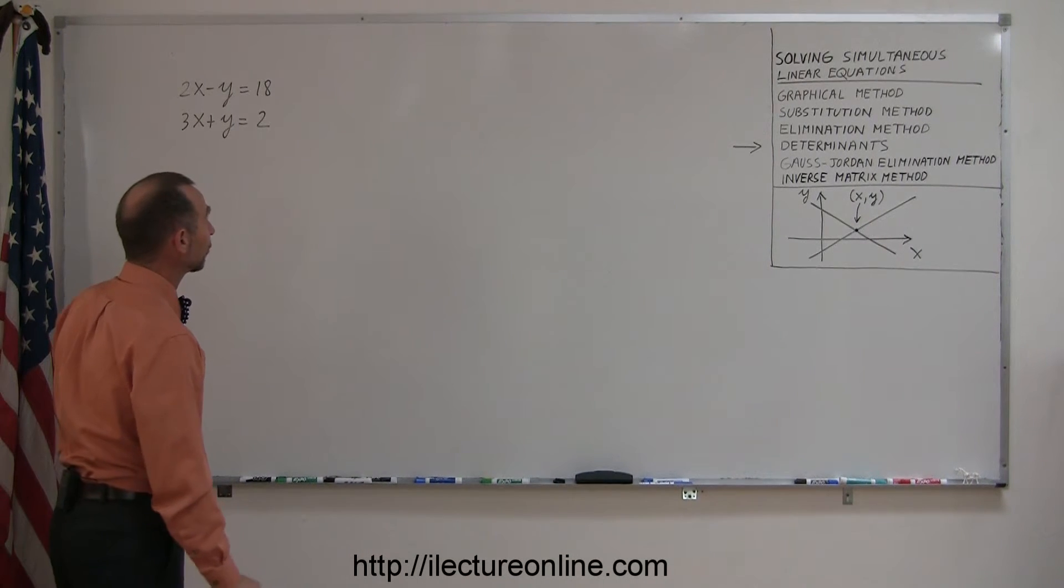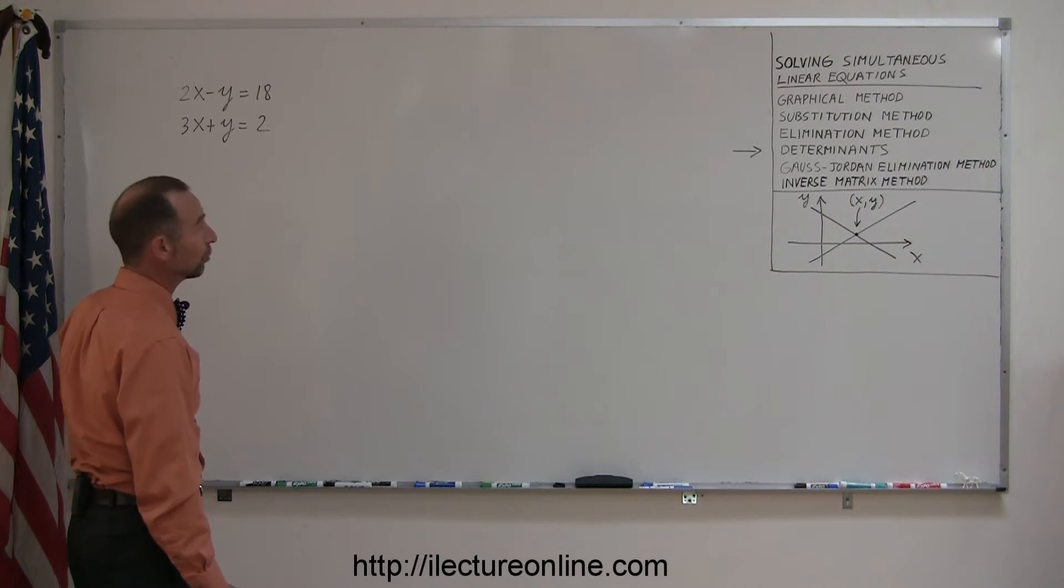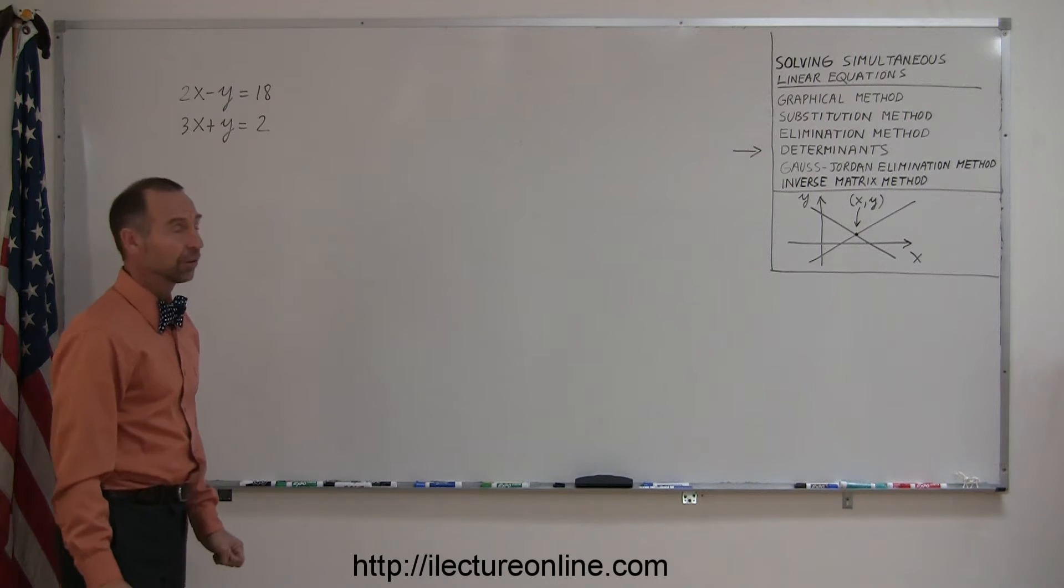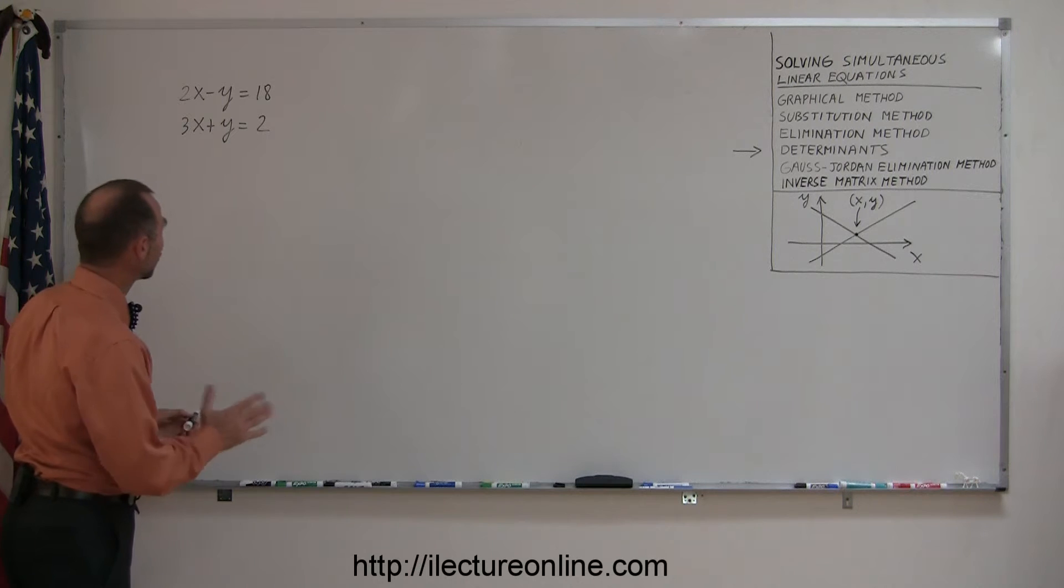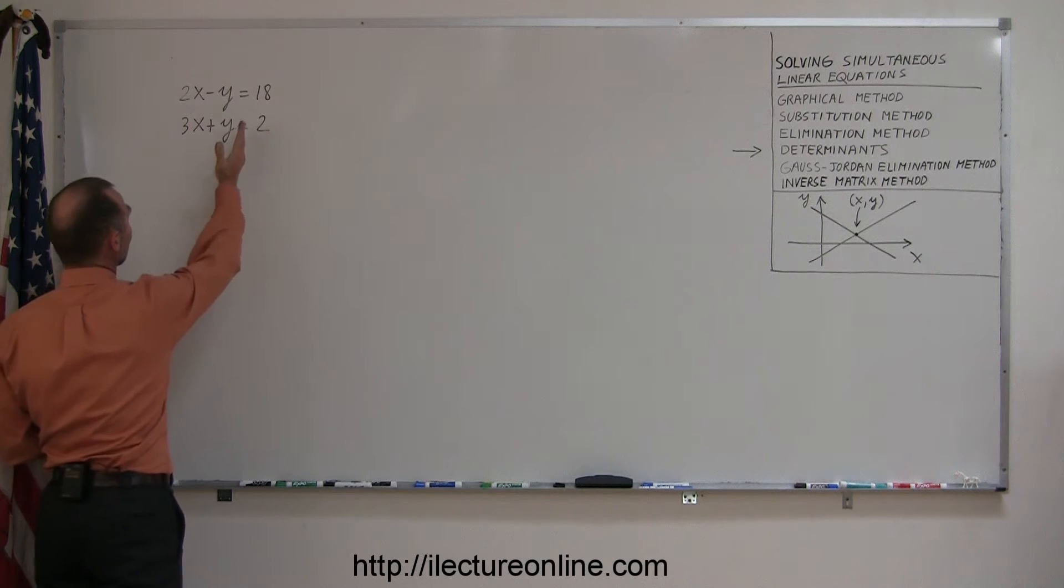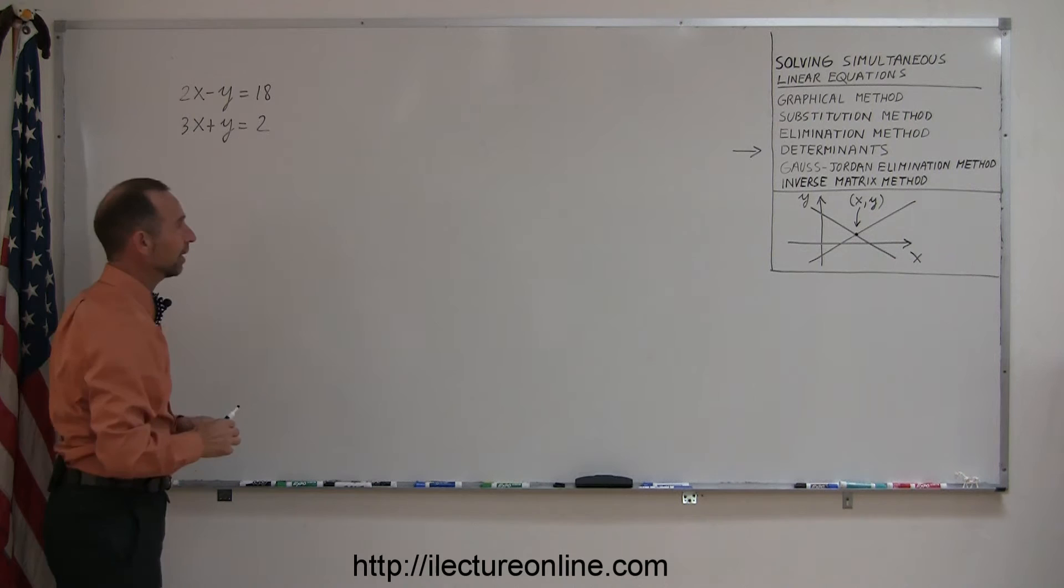Here's another example of how to solve simultaneous linear equations using the method of determinants. Here are the two equations and the first thing you want to do is make sure that they're lined up just right. You want the variables on the left side, the constants on the right side.